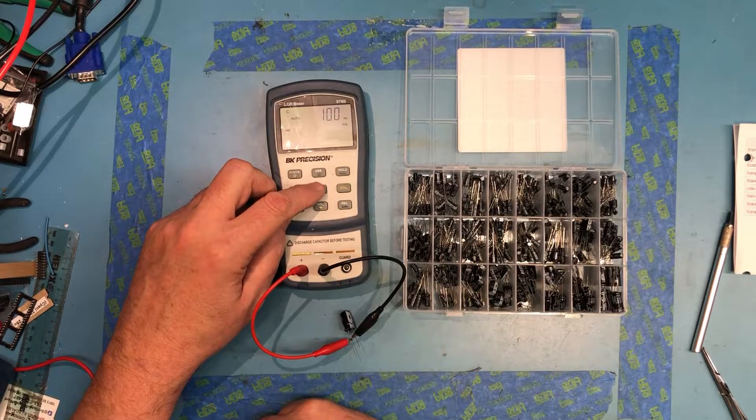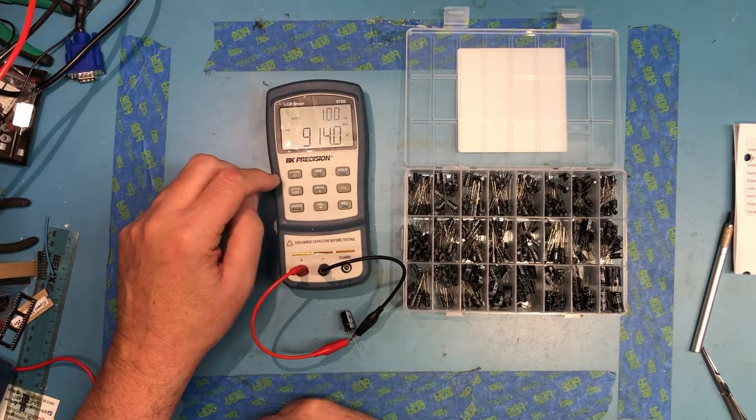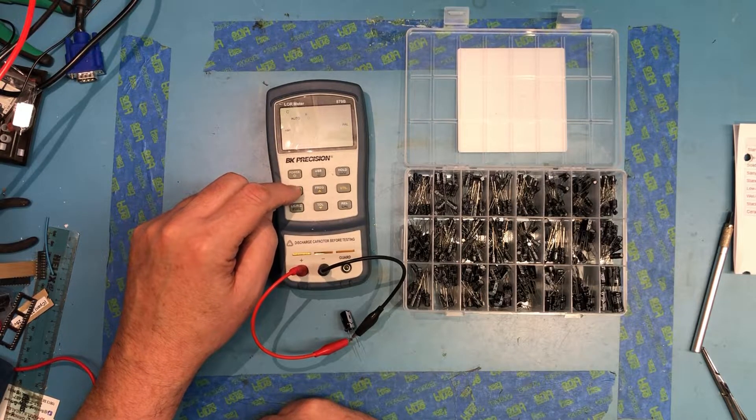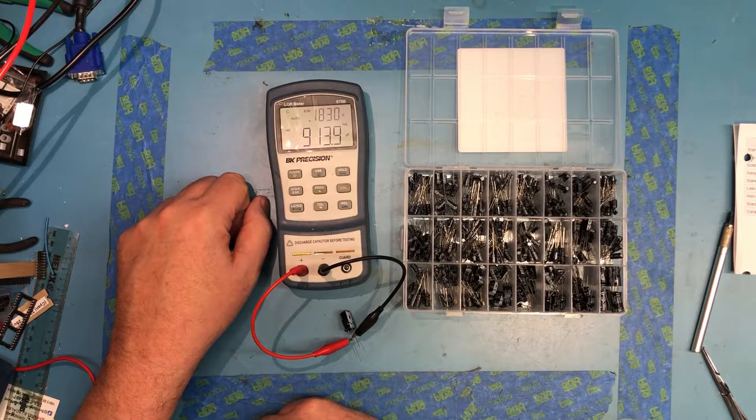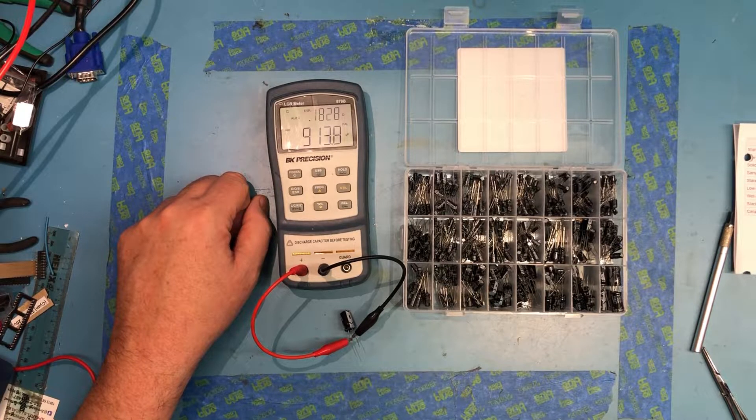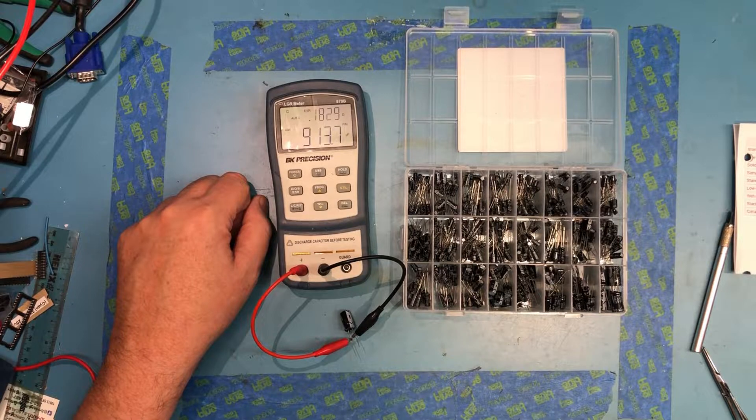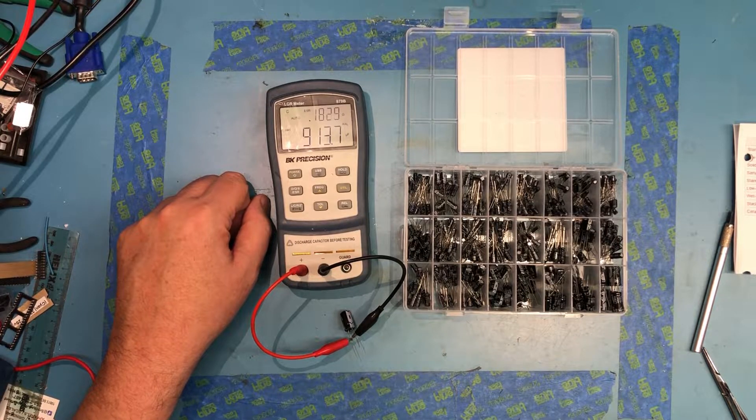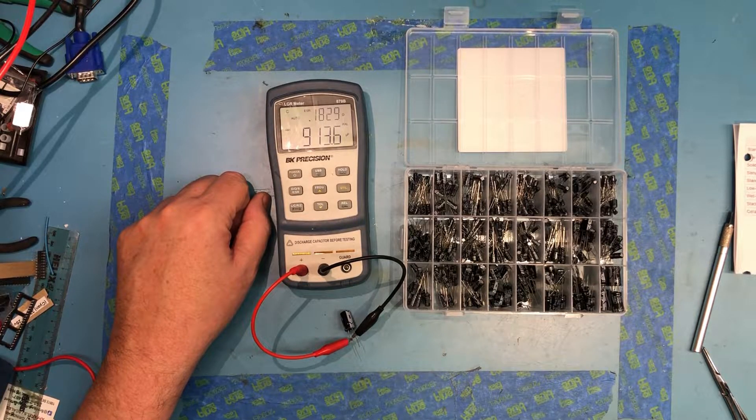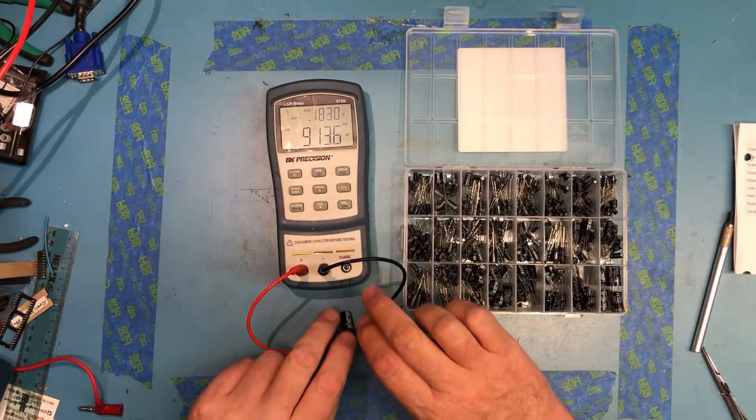Again, it's not awesome. ESR's measuring 0.18 ohms. And that's actually not bad, I think, for 1,000 microfarad cap.